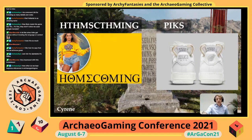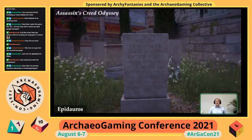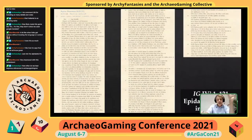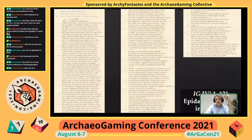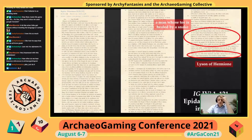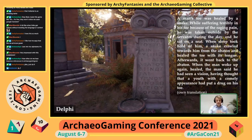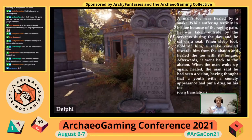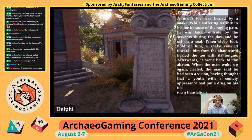Moving on to Odyssey: we've already talked about the Luson inscription, which is part of a much larger 126-line inscription. The game also uses another part of this inscription — about a man whose toe was miraculously healed by a snake from the sanctuary. In translation, it reads: 'A man's toe was healed by a snake. While suffering terribly, he was taken outside during the day and sat on a seat. When sleep took hold of him, a snake crawled towards him from the abaton and healed the toe with its tongue. When the man woke up healed, he said he had seen a vision of a youth with a comely appearance who had put a drug on his toe.'